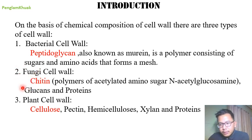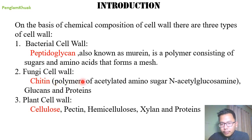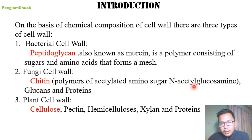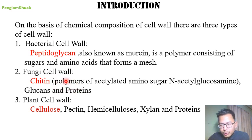In case of the fungi cell wall, the major component is chitin — chitin is a polymer of acetylated amino sugar, that is N-acetyl glucosamine. Other than chitin, fungi cell walls also contain glucans and proteins.